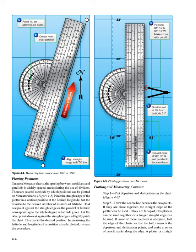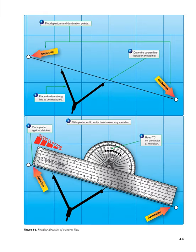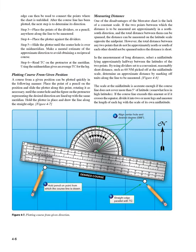Plotting and measuring courses. Step 1: Plot departure and destination on the chart (Figure 4-6). Step 2: Draw the course line between the two points. If they are close together, the straight edge of the plotter can be used. If they are far apart, two plotters can be used together or a longer straight edge can be used. If none of these methods is adequate, fold the edge of the chart so that the fold connects the departure and destination points, and make a series of pencil marks along the edge. A plotter or straight edge can then be used to connect the points.